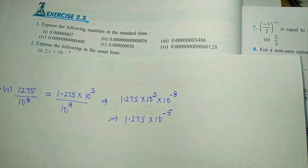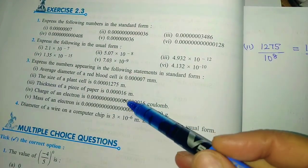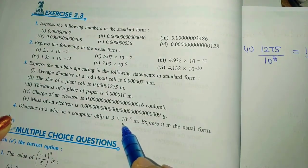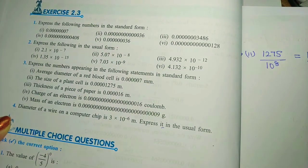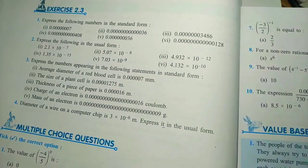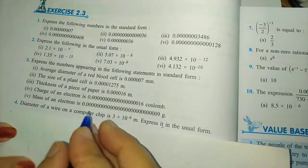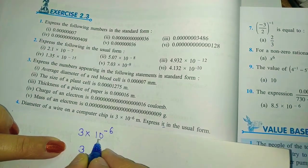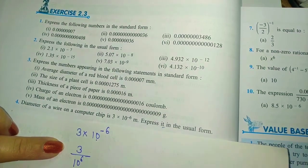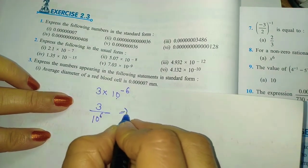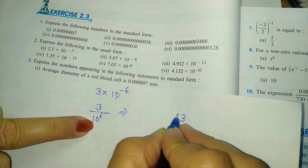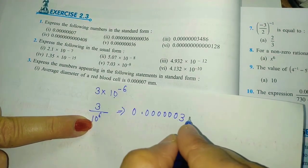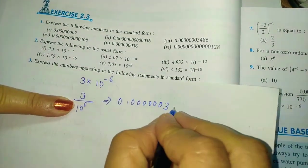Now based on this you have to solve the 3rd, 4th, and 5th parts by yourself. For question number 4, the numbers are given in standard form and you have to convert them to usual form. They have given 3 × 10 raised to the power minus 6. First convert the negative power to positive: 3 upon 10 to the power 6. Then count 1, 2, 3, 4, 5, 6 places — the decimal shifts left. The number is 0.0000003 meters.